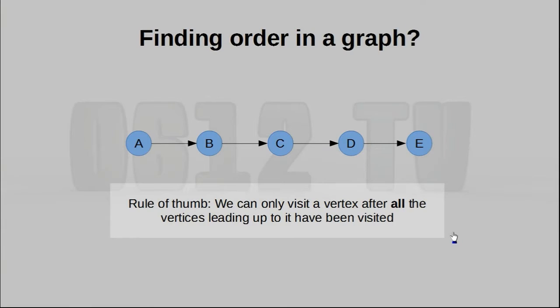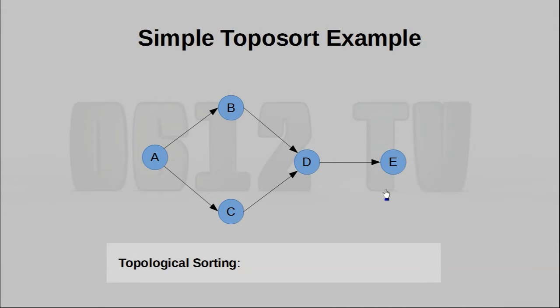To make the intuition more concrete, let's understand a simple rule of thumb when it comes to getting a topological sorting, and that is we cannot visit a vertex until all the vertices that lead up directly to it have been visited. To sort of seal the deal on this concept, let us take a look at a very simple example here. We're going to do this trace entirely using intuition.